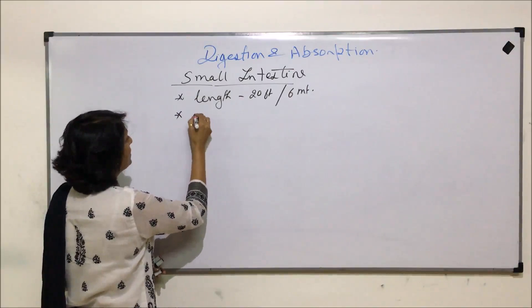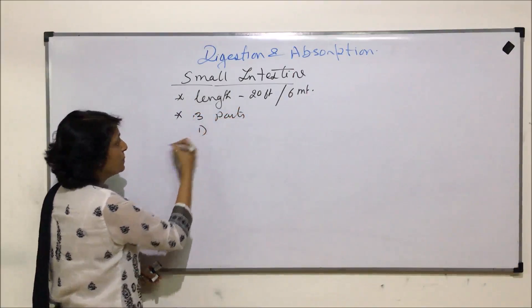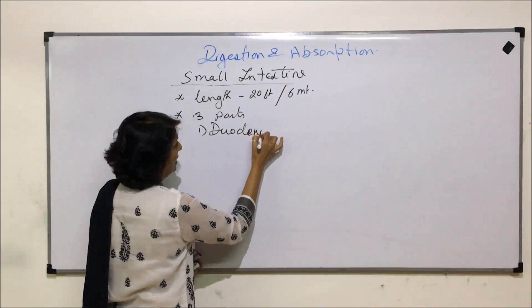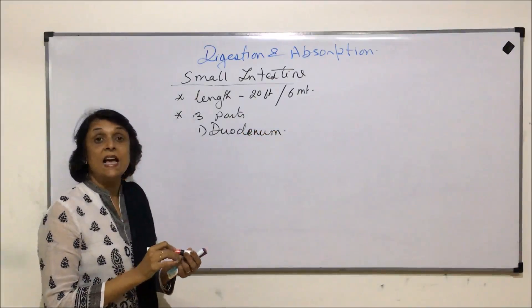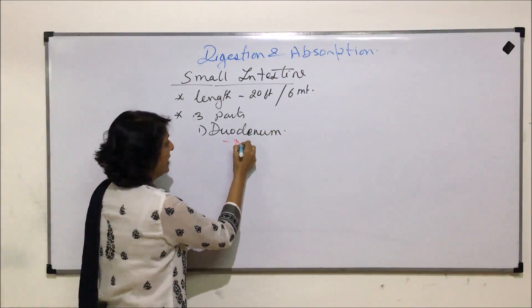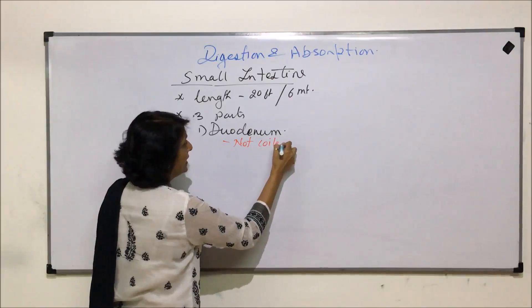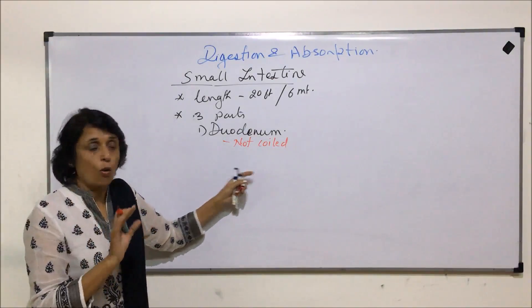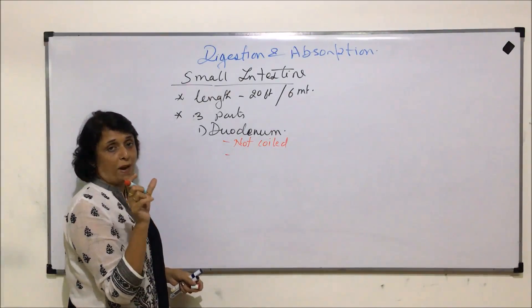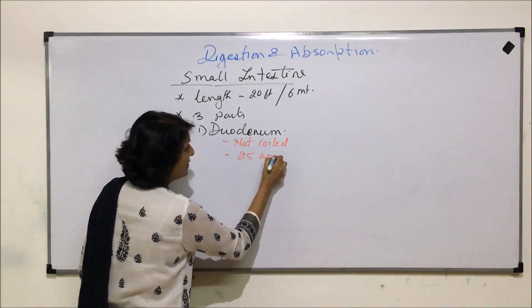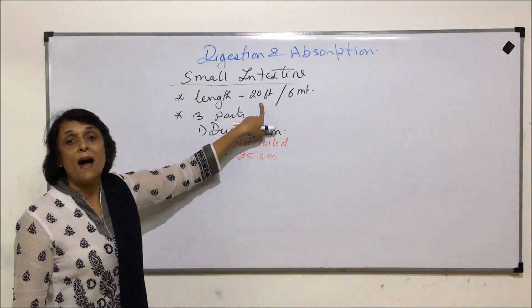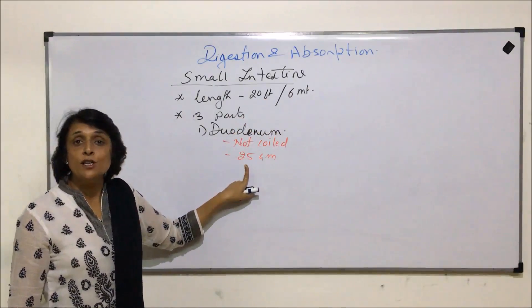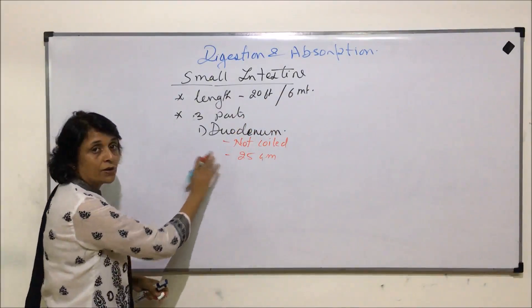The first part is known as duodenum. This part of small intestine is uncoiled — there is no coiling. It is a bent tube, not a coiled structure. It is a short part, approximately 25 centimeters long. So the maximum part of the 20 feet, or approximately 6 meters of small intestine, has its first part making only a little bit, and it is not at all coiled.